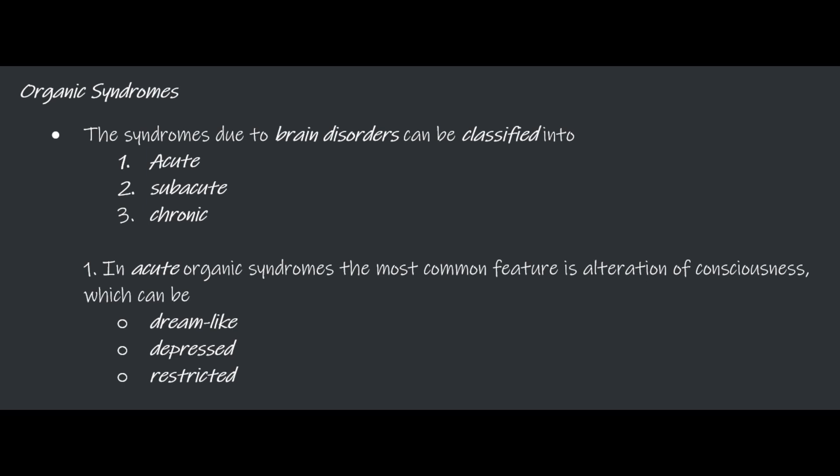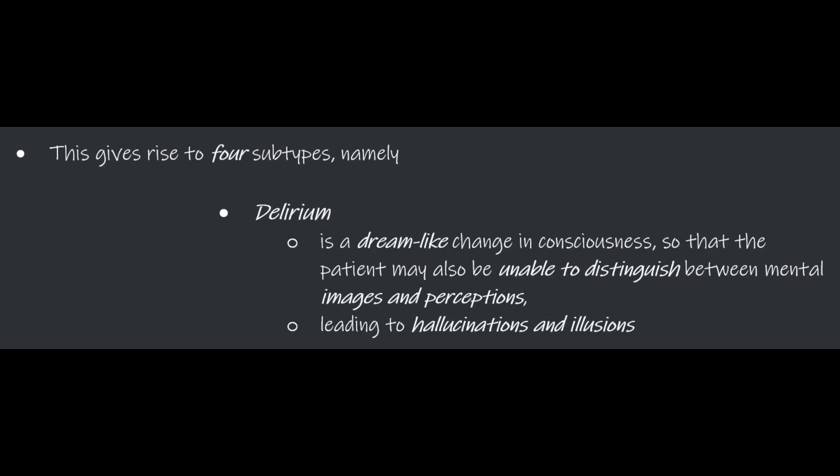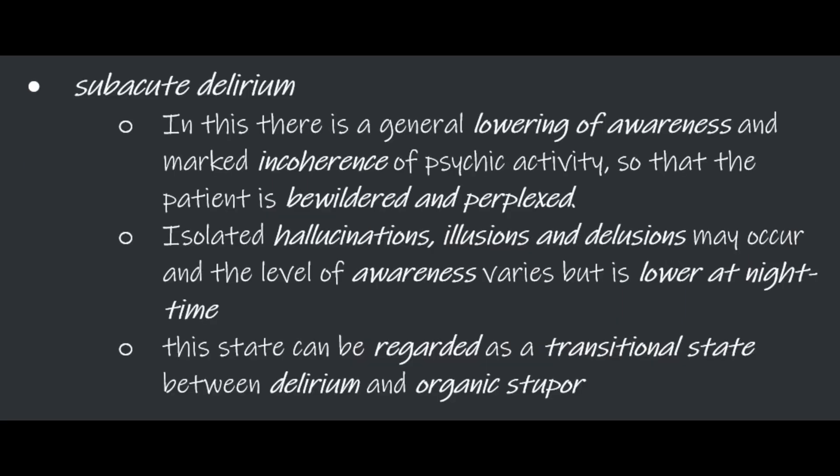In acute organic syndromes, the most common feature is alteration of consciousness, which can be dreamlike, depressed, or restricted. This gives rise to four subtypes: delirium, subacute delirium, organic stupor or torpor, and the twilight state. Delirium is a dreamlike change in consciousness so that the patient is not able to distinguish between mental images and perceptions, leading to hallucinations and illusions. In subacute delirium, there is general lowering of awareness and marked incoherence of psychic activity so that the patient is bewildered and perplexed. Isolated hallucinations, illusions, and delusions may occur, and the level of awareness varies but is lower at nighttime. This state can be regarded as a transitional state between delirium and organic stupor.